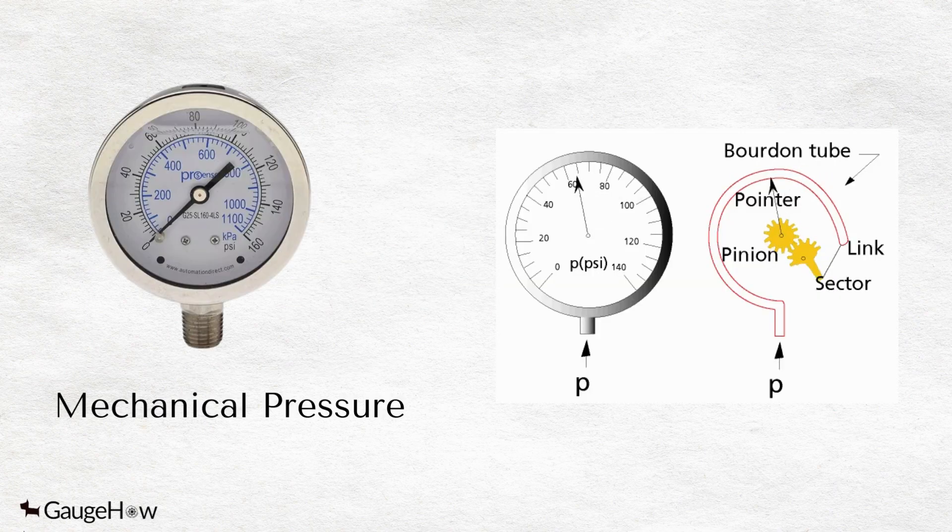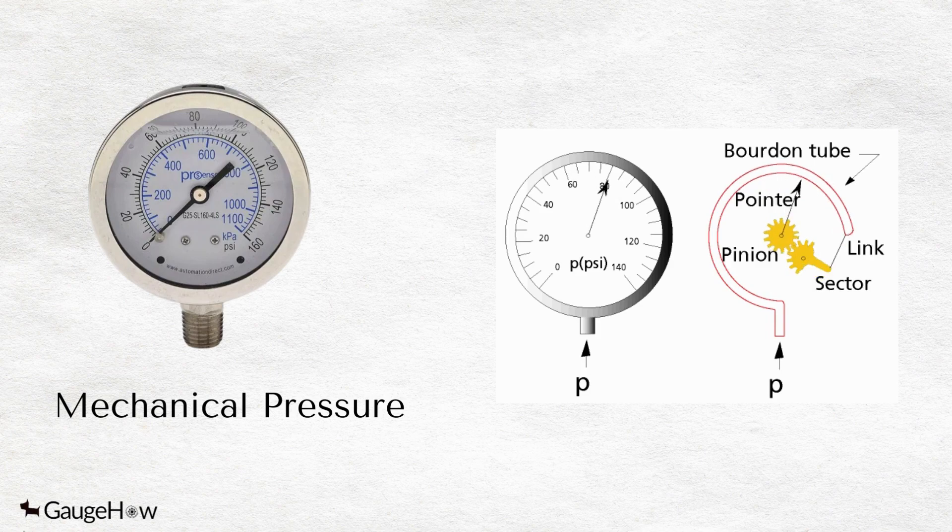Mechanical pressure is measured by a bellows, diaphragm, or Bourdon tube that converts fluid pressure into force.